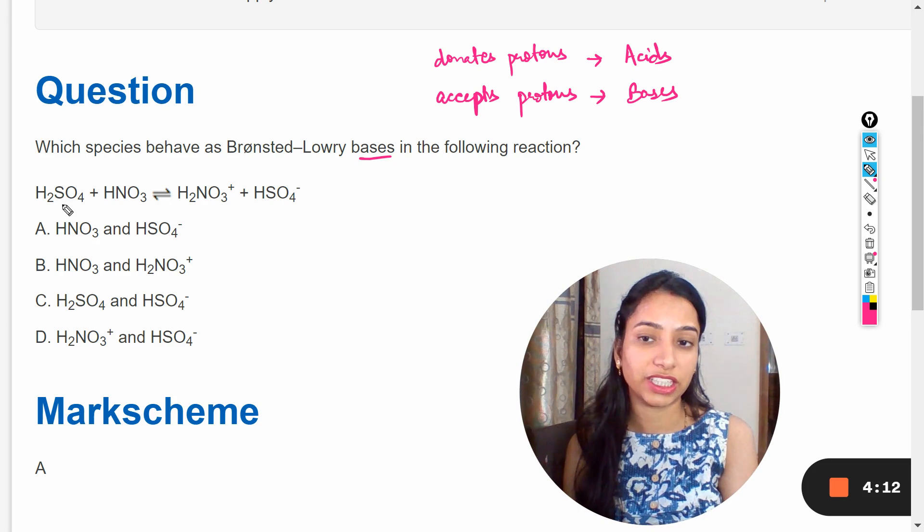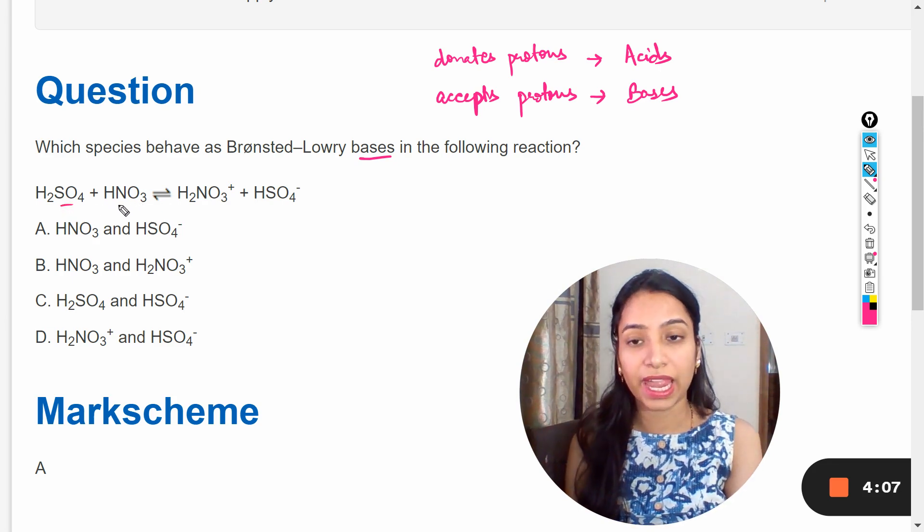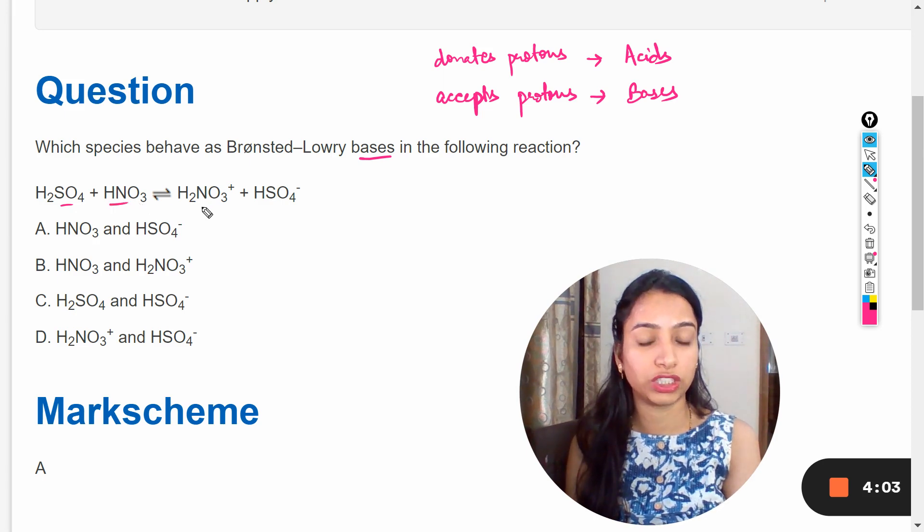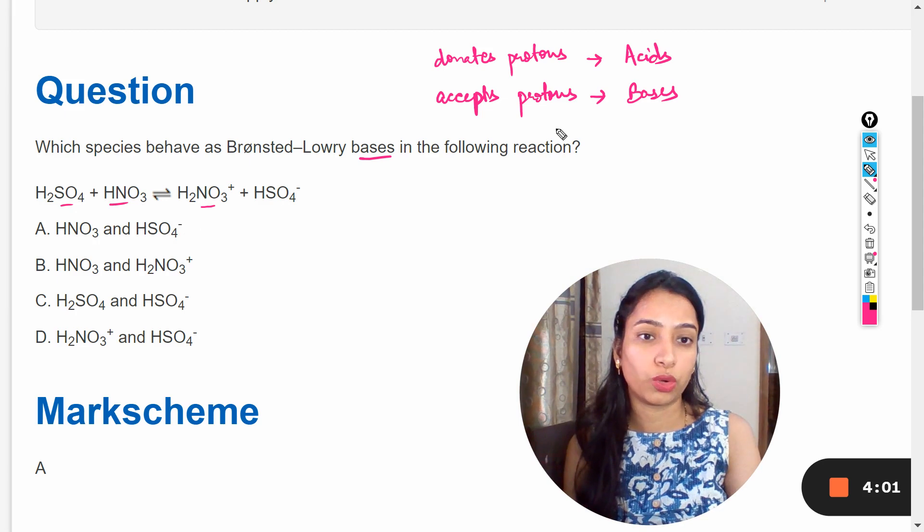In the forward reaction this H2SO4 donates its proton to HNO3 and after accepting proton this HNO3 converts to H2NO3 positive because proton is H positive.